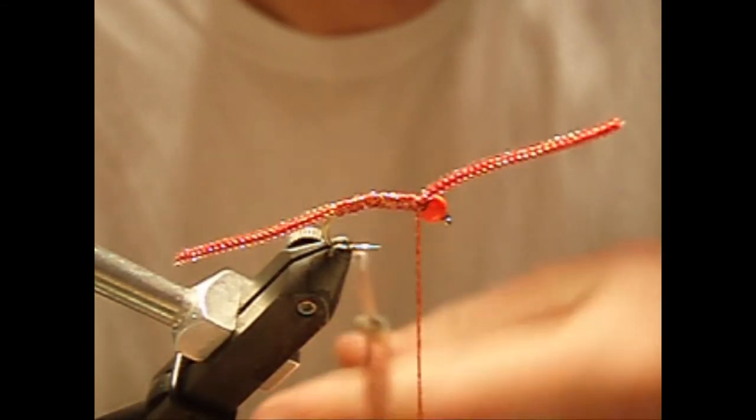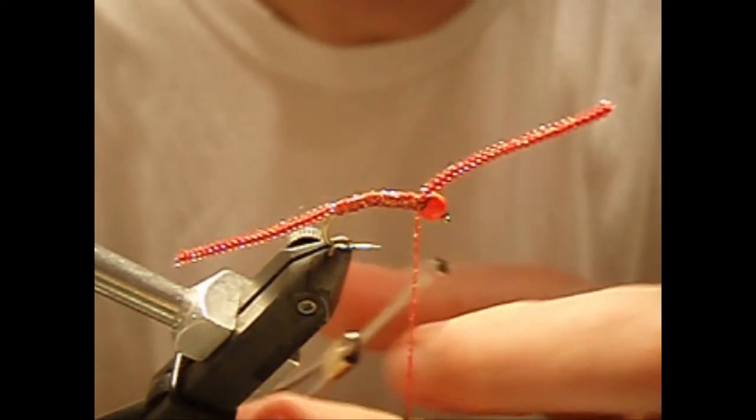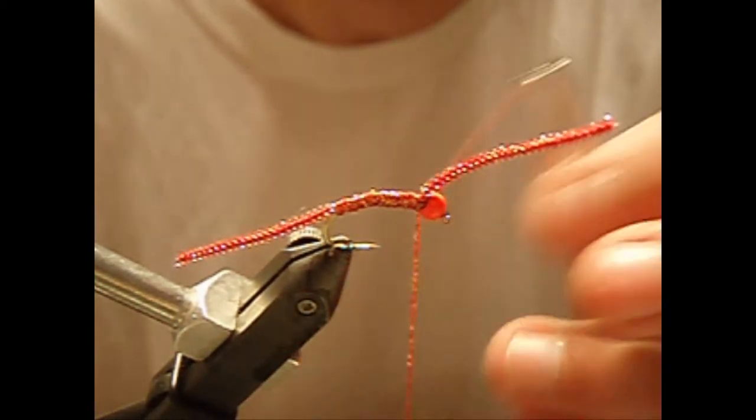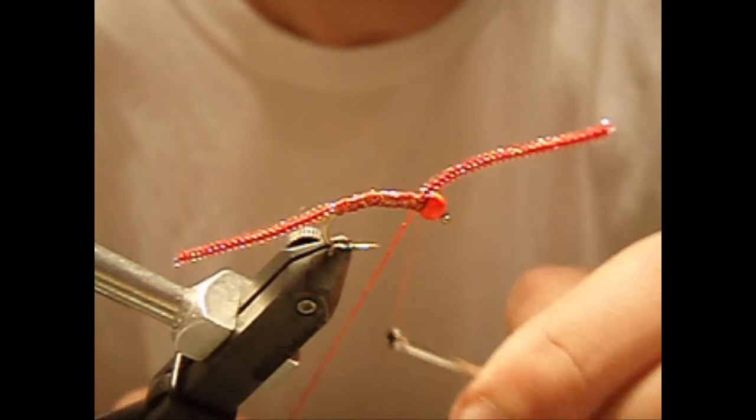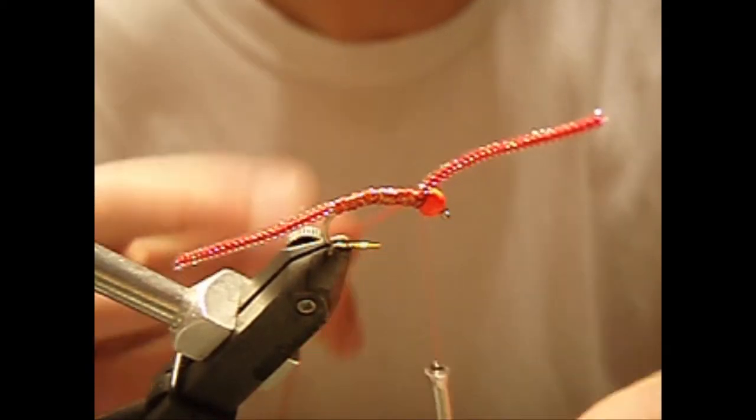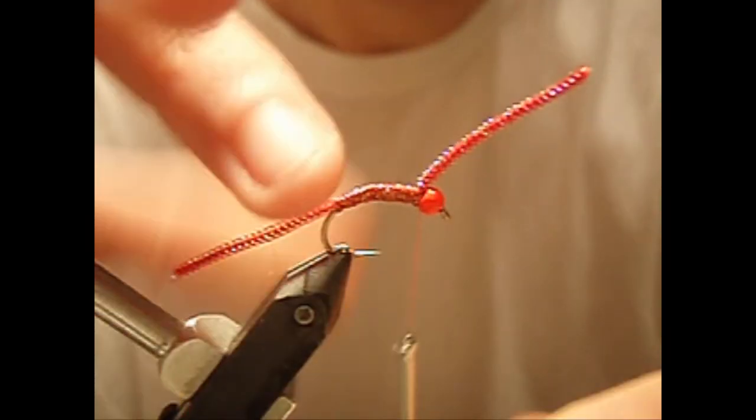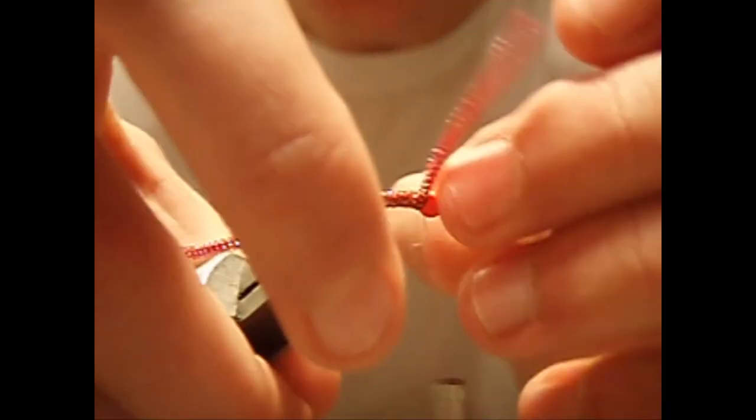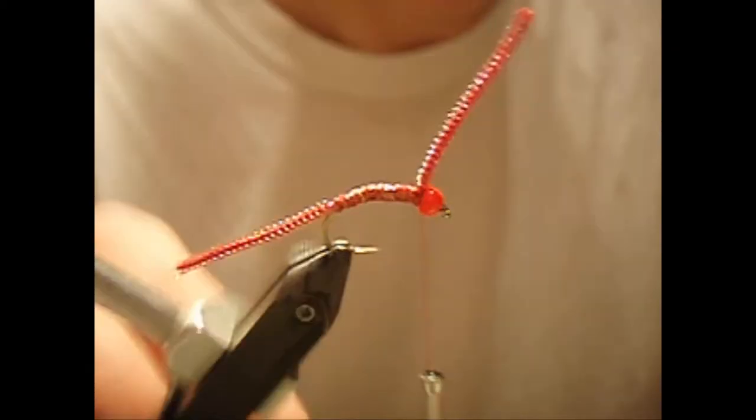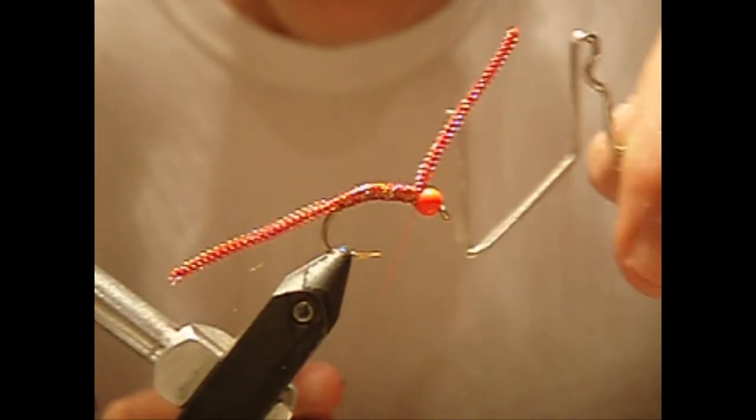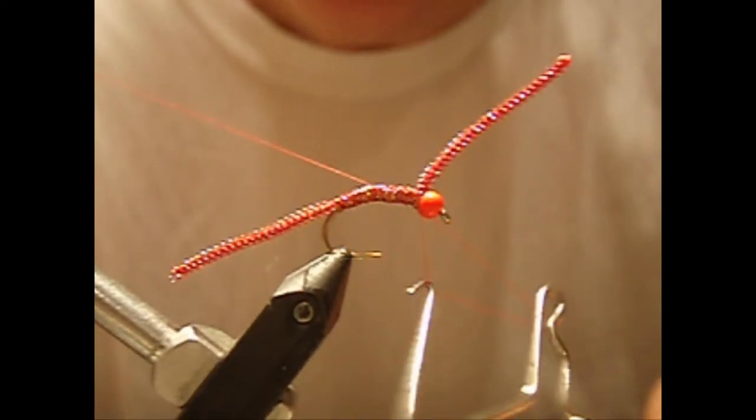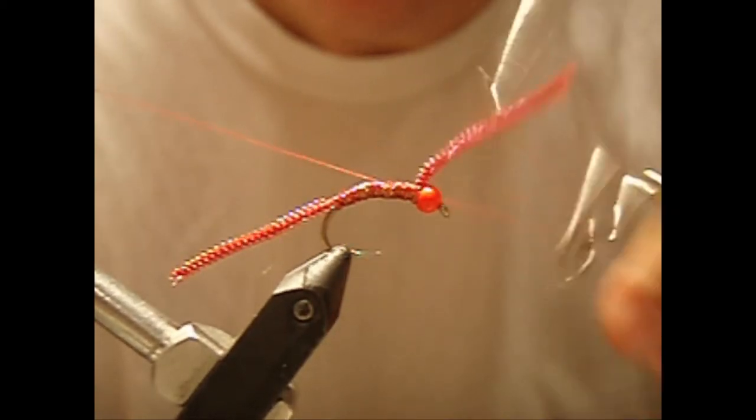Now you're going to tie off the diamond braid - about three wraps behind it and then one in front. Cut that off. One more wrap. Position your bead; sometimes they like to slide around.